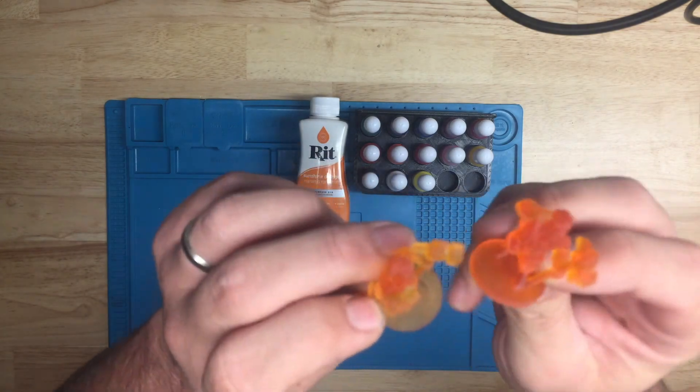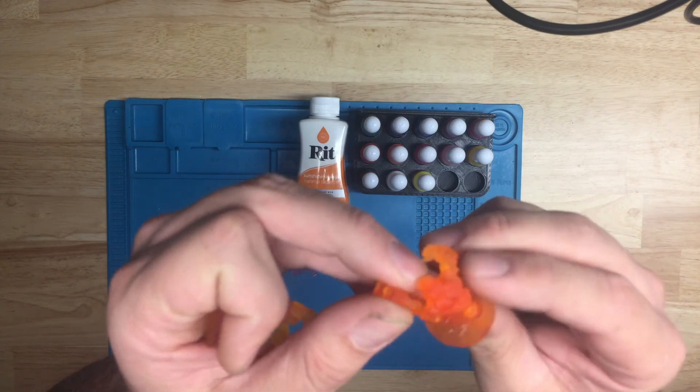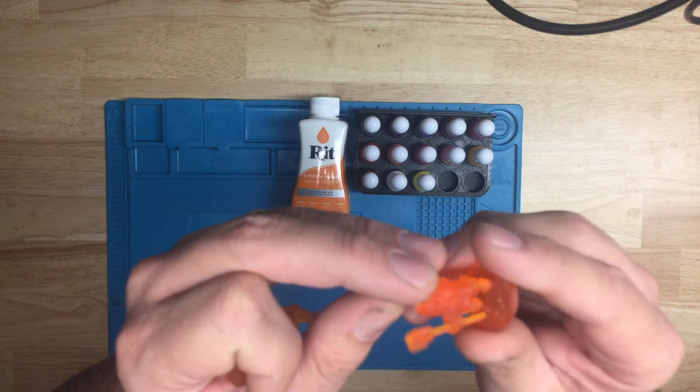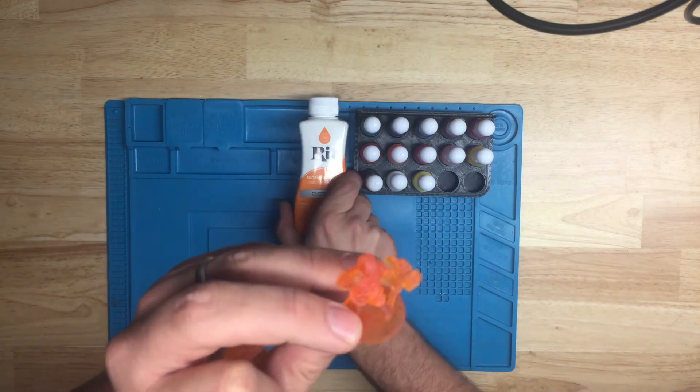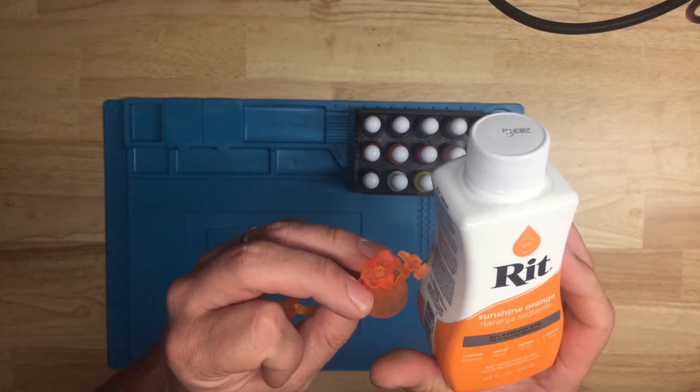Even that little sediment that was left in the bottom wasn't a problem. So it looks like RIT is a very, very good choice to color your resins.